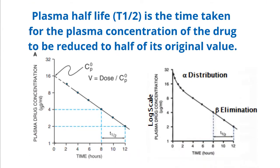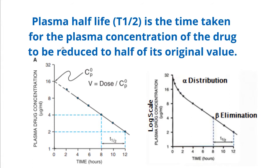Let us look at the given picture. The initial concentration of the drug is 16 microgram per ml, and then in 4 hours it reduces down to 8 microgram per ml. You can see that the slope is constant — from 8 it goes down to 4 microgram per ml in another 4 hours, and similarly from 4 it goes down to 2 microgram per ml in another 4 hours. So the half-life is the time for the concentration to reduce to half its original value. From 16 it reduces to 8, so the half-life is 4 hours.